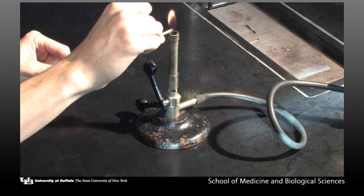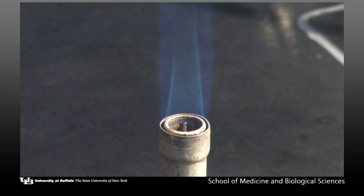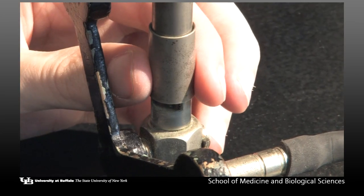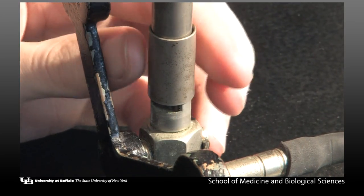When properly adjusted, a Bunsen burner produces a flame with two cones. This may be achieved by rotating the metal collar which monitors the influx of air.